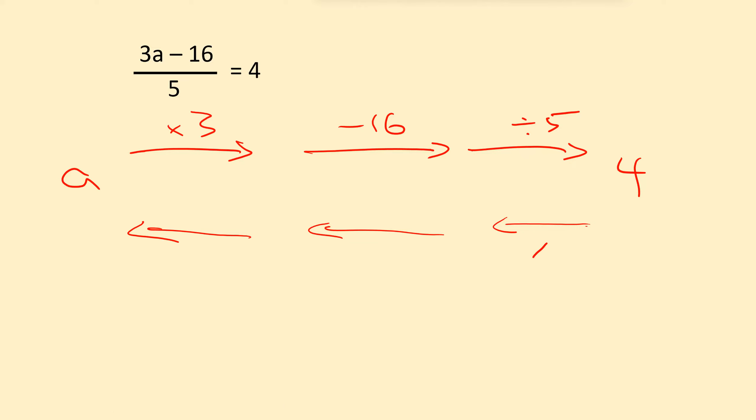So the inverse of divided by 5 is, of course, times 5. So let's do that. 4 times 5 is 20.